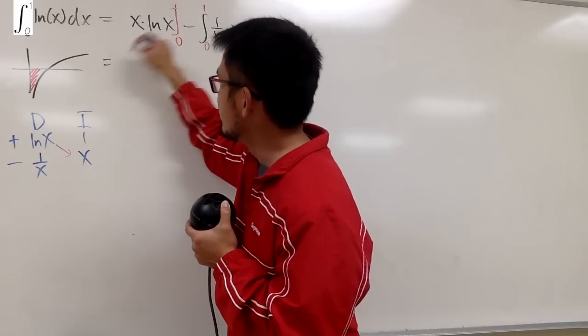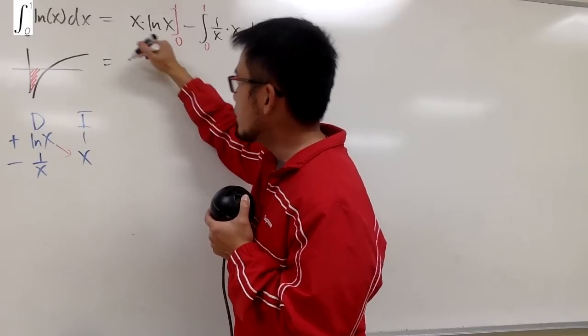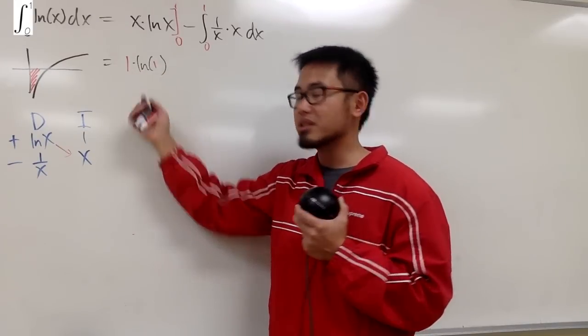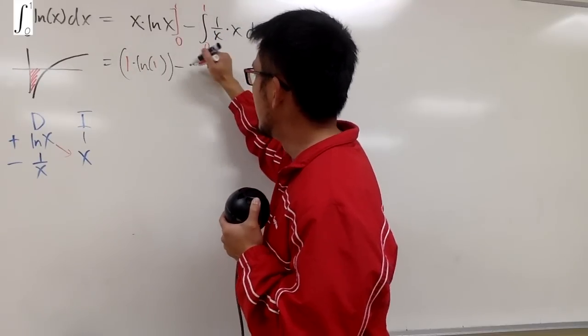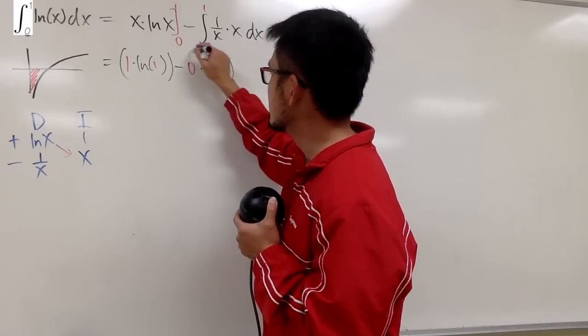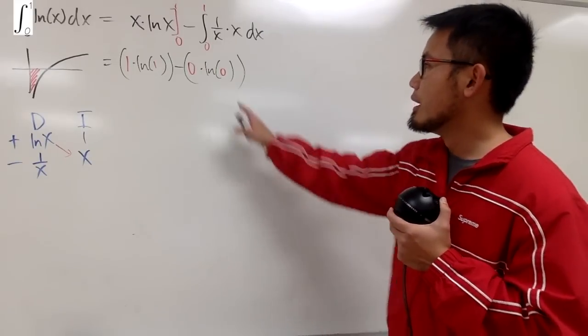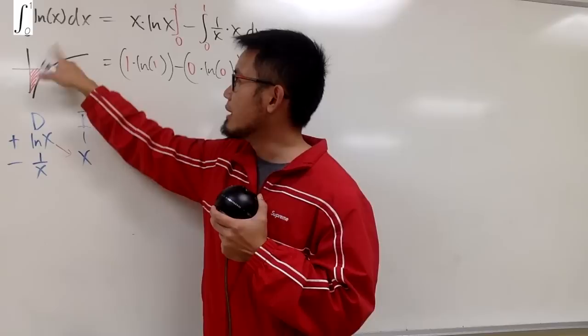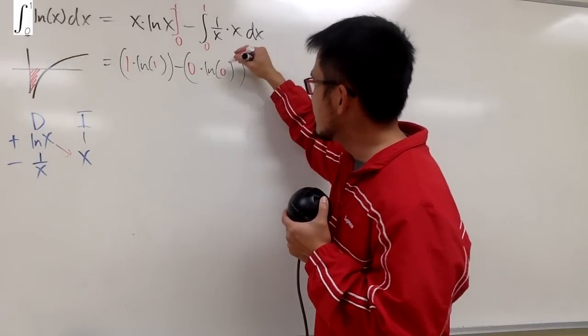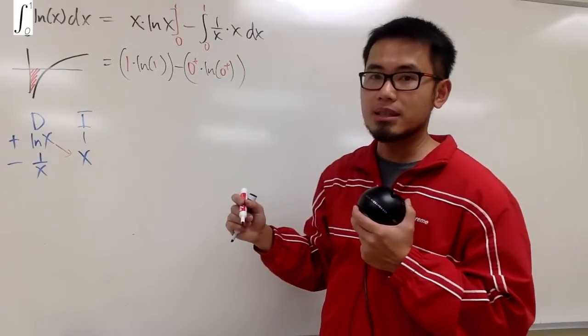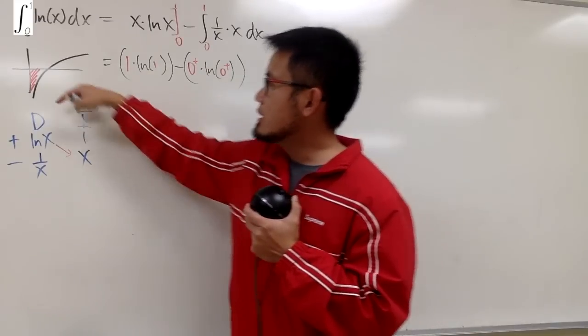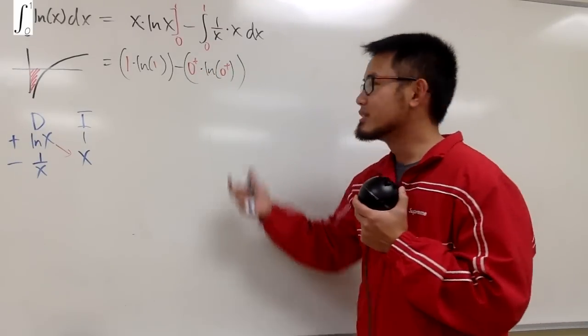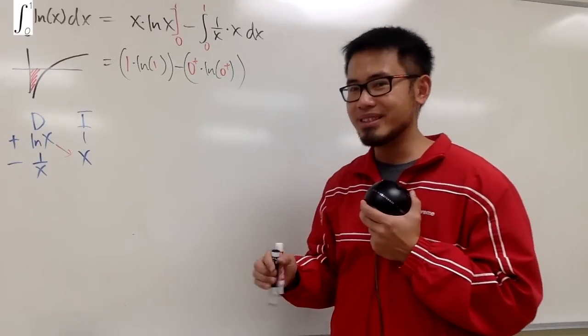When I plug in 1, I get 1 times ln(1). Thanks to ln(1) equals 0, the whole thing is 0. But when I plug in 0, I will have 0 times ln(0) for the second part. Because ln is only defined for positive values, this is really 0+. And ln(0+) is negative infinity. Negative infinity times 0 is an indeterminate form. We have to do more work. We have to use L'Hopital's rule.